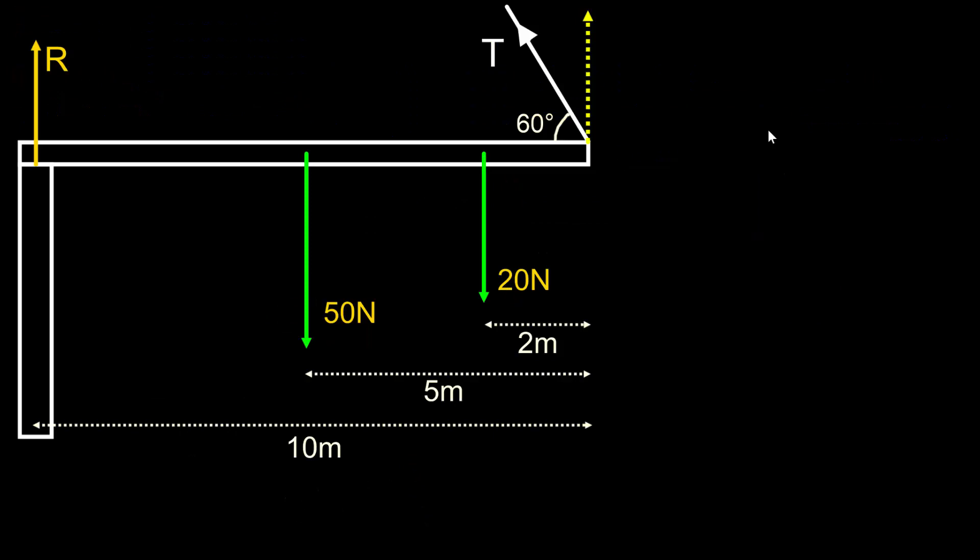Let's move on to a slightly more challenging problem. In this problem, we have a beam that is resting at one end on a pillar, and the other end is supported by a cable that is pulling at 60 degrees from the horizontal. The beam itself has a weight of 50 Newtons acting from the centre. It is a uniform beam. And an additional force of 20 Newtons is acting on the beam 2 metres from the end. The question here is to find R and T.